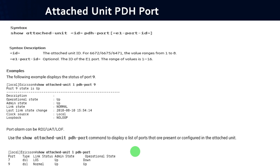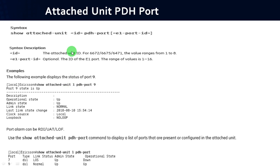To get the attached unit PDH port status, use: show attached-unit <id> pdh-port <e1 port id>. The id is the attached unit id for routers 6672, 6675, and 6471, with values ranging from 1 to 8. The E1 port id is optional, with a range of 1 to 16. Example: show attached-unit 1 pdh-port 9 — this shows the status of PDH port number 9, with operation status up, admin status up, link state normal, and clock source local.